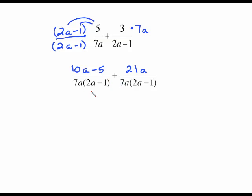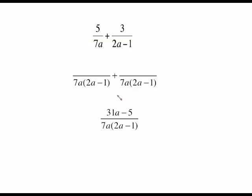And all we have to do now is put together like terms. We have a common denominator, we've created our new numerator, put your like terms together which is just 10a and 21a which gives us 31a minus 5. That will not factor. There's no way anything cancels so we're finished.